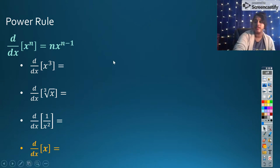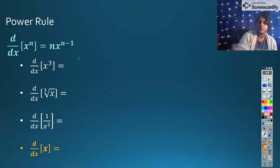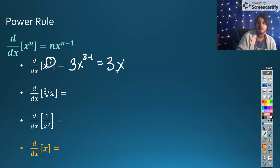So I have three examples here. I'm going to walk through them real quick. Here is my n value. That's three. So I'm going to bring it to the front. And it becomes three minus one. So that simply becomes 3x squared. And that's it.